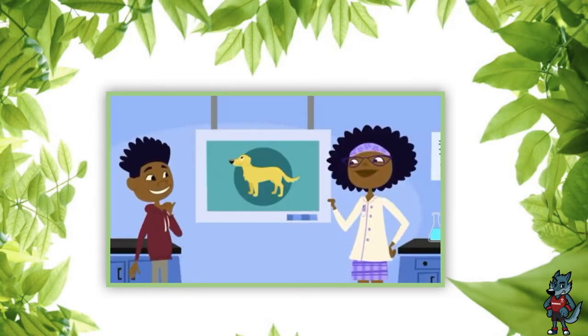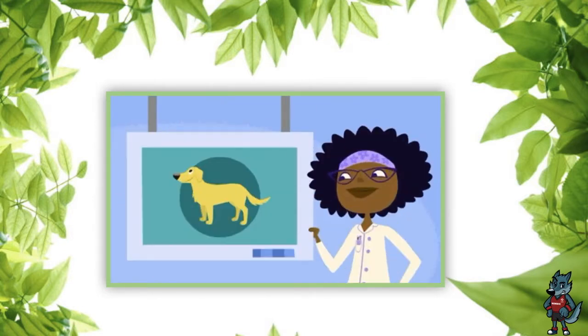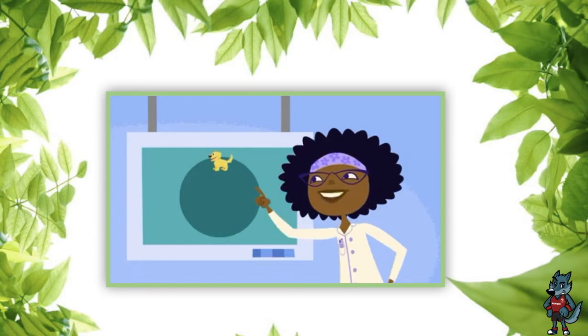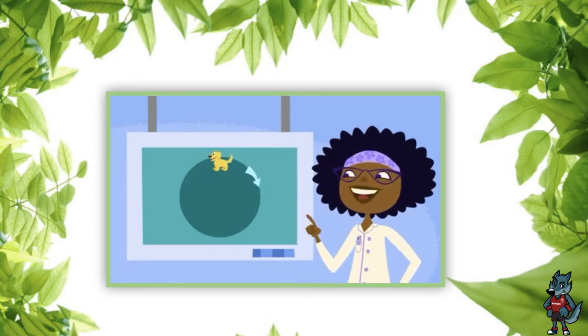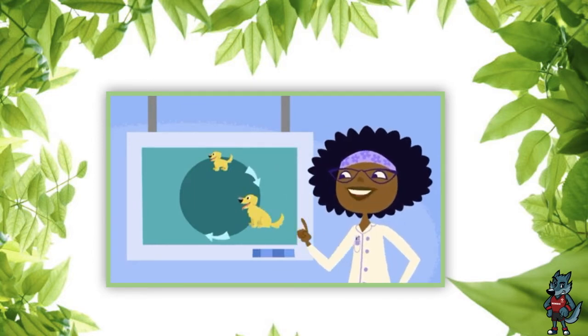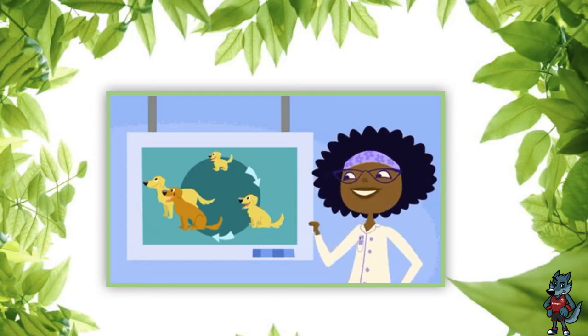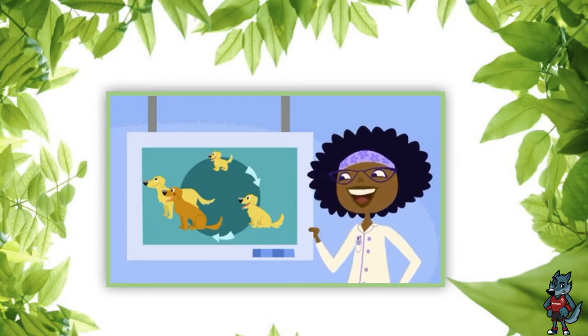That's Jester! First, Jester was a puppy, a young dog, and then an adult. Adult dogs can have more puppies.